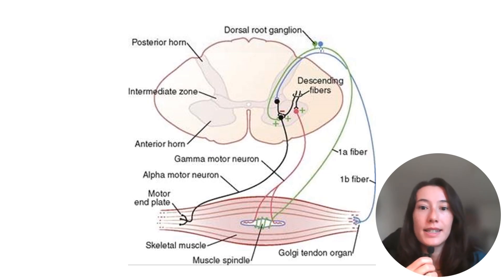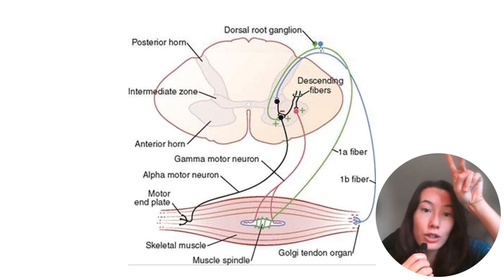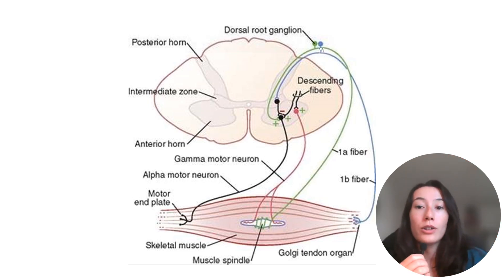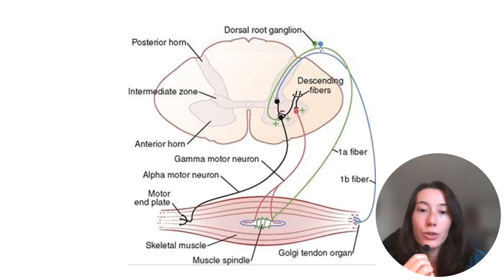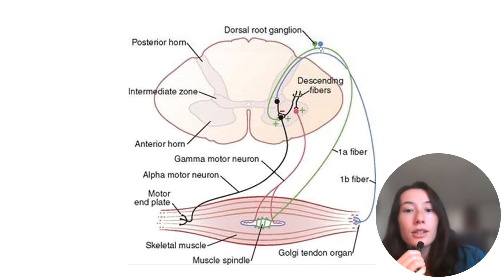Number two, where it says descending fibers — you see a small circle around two lines — these are descending fibers coming from the brain. Just imagine if you drew an extension of these two lines all the way up and off the screen; they're coming down from the brain to the spinal cord to this level. Also note that the descending fibers attach to both the gamma and the alpha motor neuron. Additionally, the 1A fiber — this is that annulospiral ending — is our sensory neuron that, if you follow the green line directly, communicates with the alpha motor neuron.